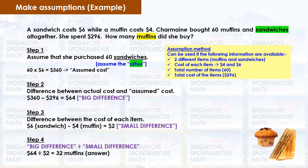Step 4: Big difference divided by small difference. 64 divided by 2 equals 32. That's our answer — Charmaine bought 32 muffins.